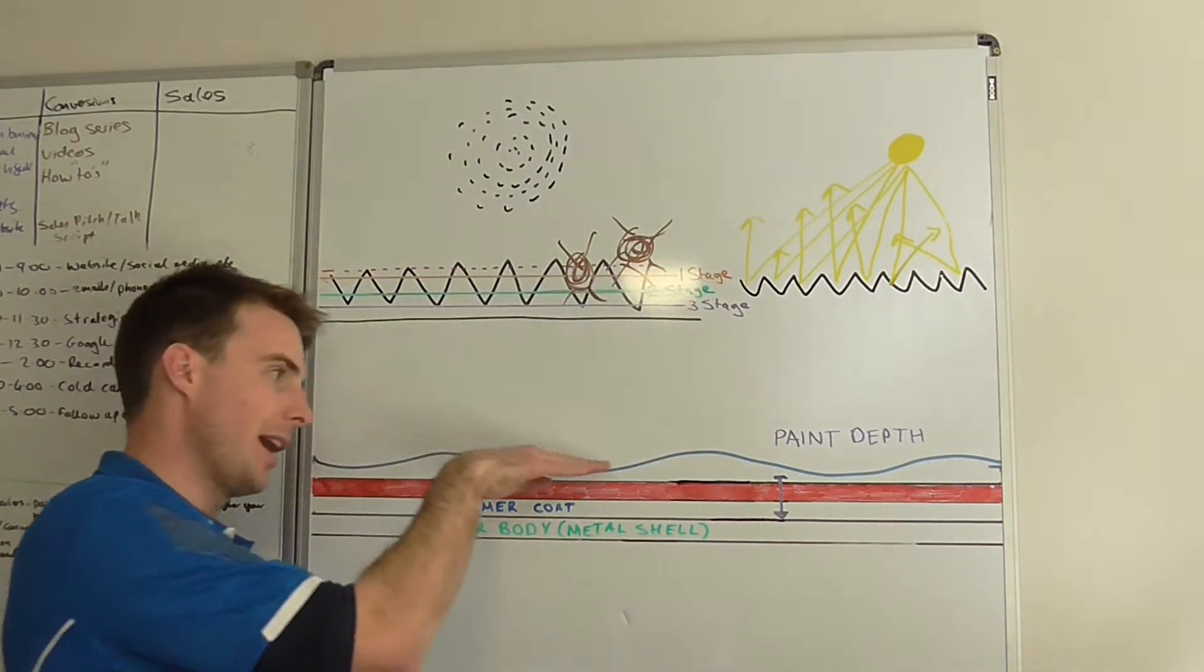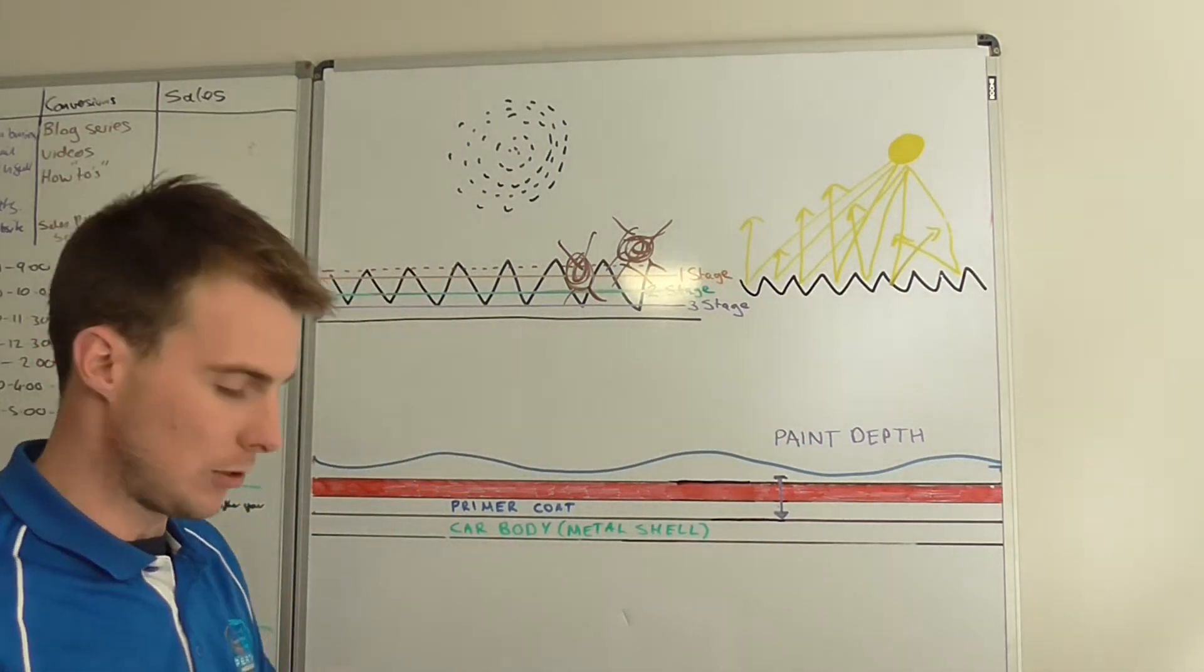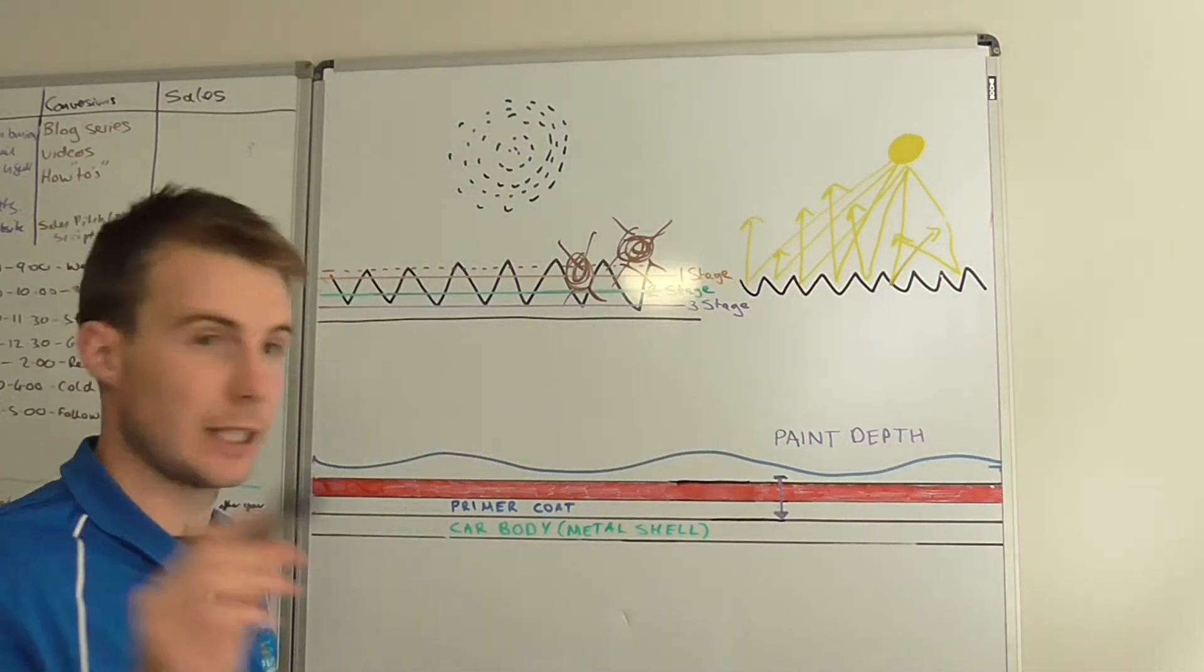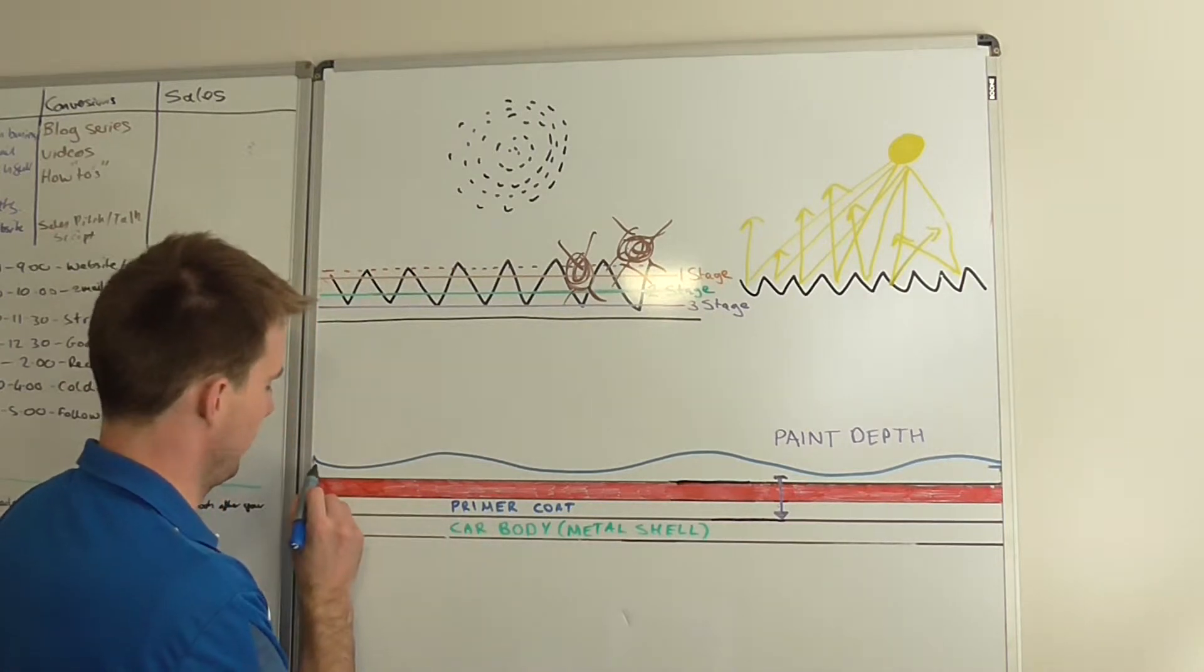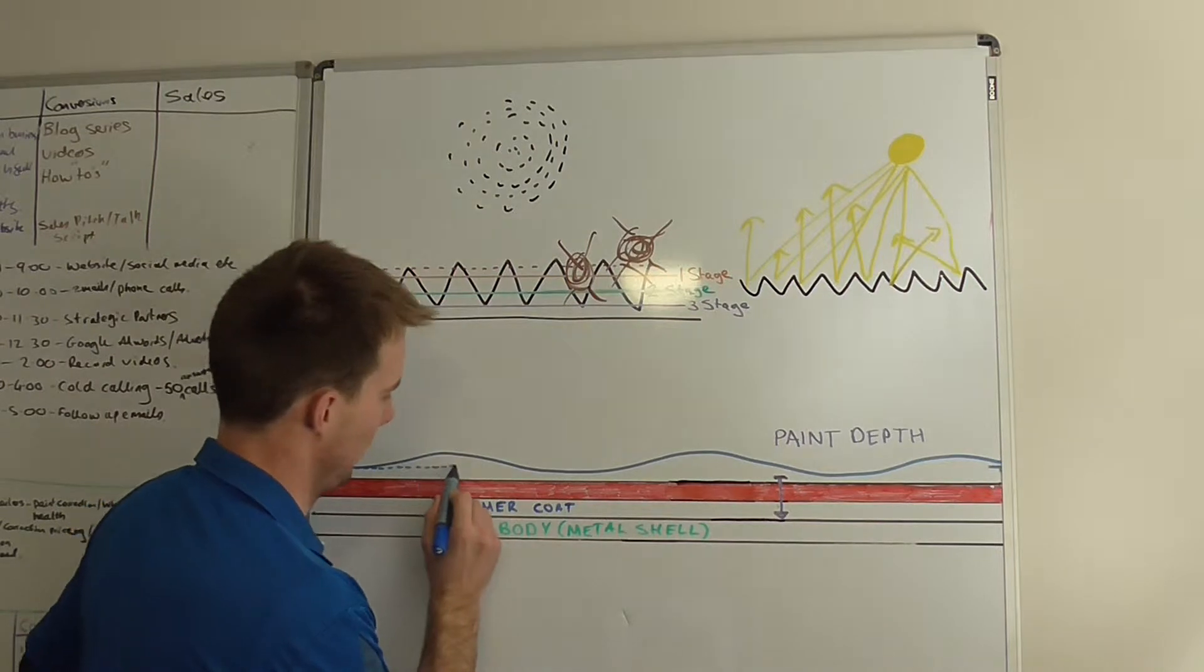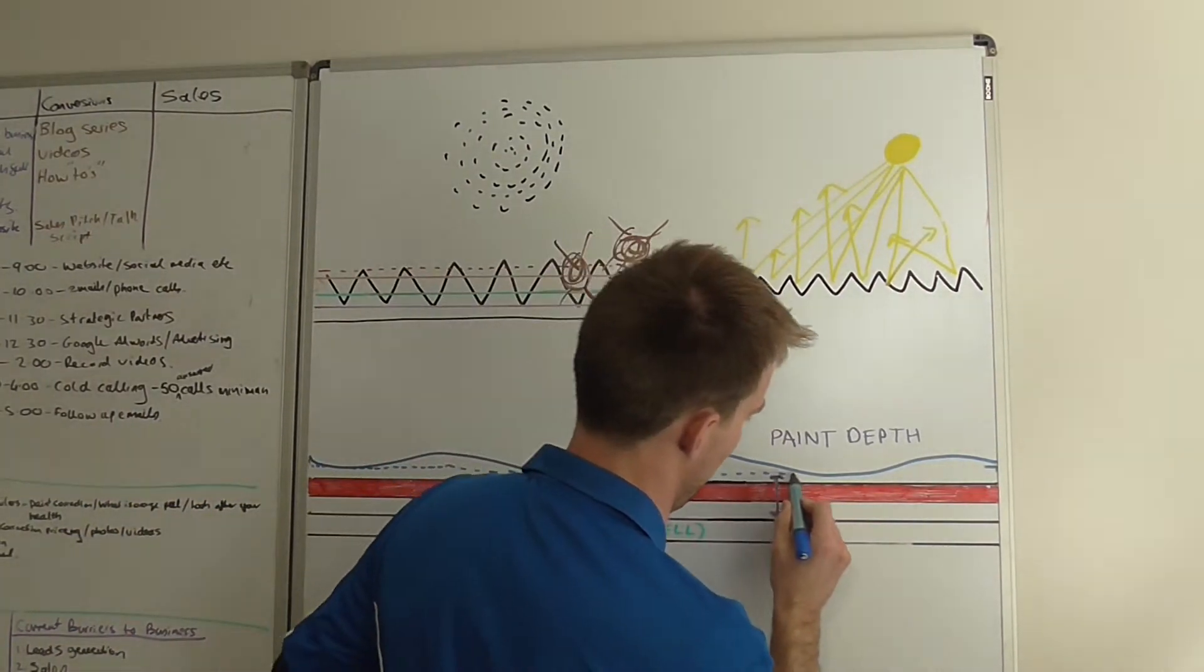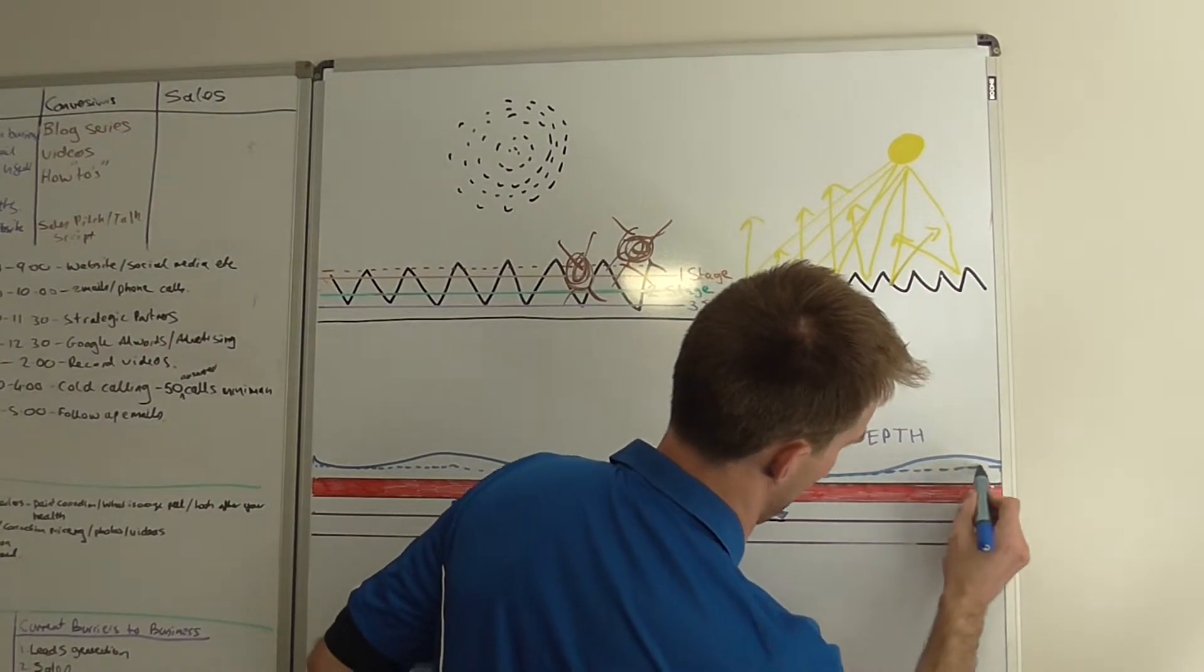So we're looking at our paintwork. We've got the surface like that, as you can see from my line. So what wet sanding does basically is you're taking off the layer of clear coat in order to get it to the lowest point.